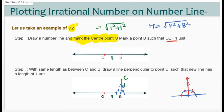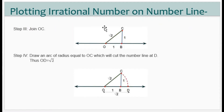Once you have the 90 degree angle, make a 1 unit arc to mark point C — this gives perpendicular of 1 unit. Next, join OC. OC is the hypotenuse, and its value is root 2, which is our required value. But this point is not yet on the number line.